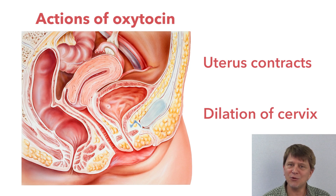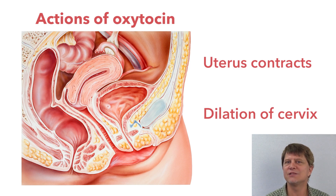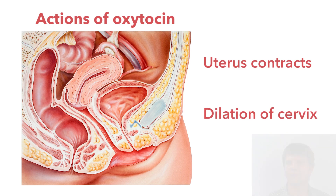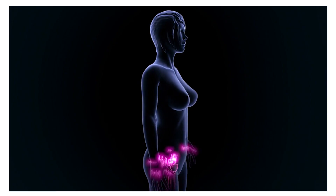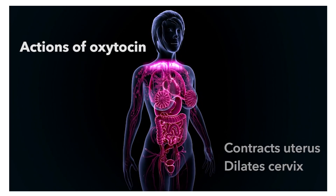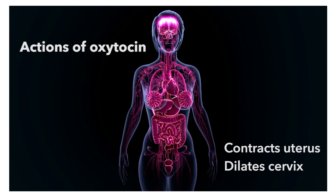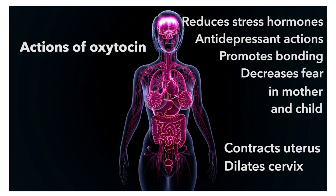The most profound increase in oxytocin levels comes just before labor, and if the mother is breastfeeding, in the first few weeks after labor as well. During labor, oxytocin not only contracts the uterus and dilates the cervix, but it also gets into the fetal brain and prepares the fetus for the birthing process, helping reduce the vulnerability of the fetus to hypoxic shock and other shock.